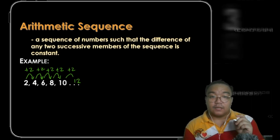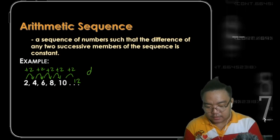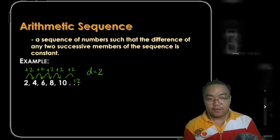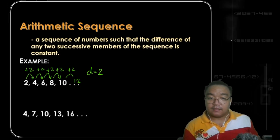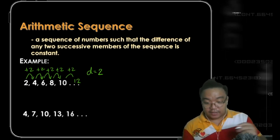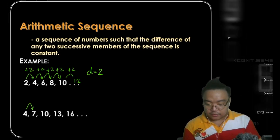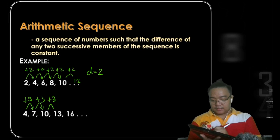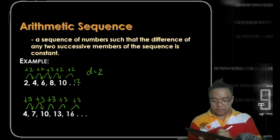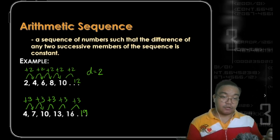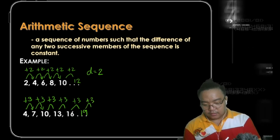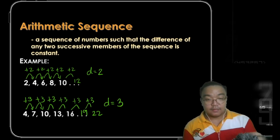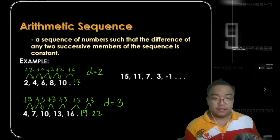The difference of any two successive members is 2, so let's use d to represent that constant difference. Another example is the sequence 4, 7, 10, 13, and 16. The number next to 16 can easily be obtained by following the pattern: plus 3, plus 3, plus 3. So 16 plus 3 gives us 19, then 19 plus 3 gives us 22. The pattern is adding 3.